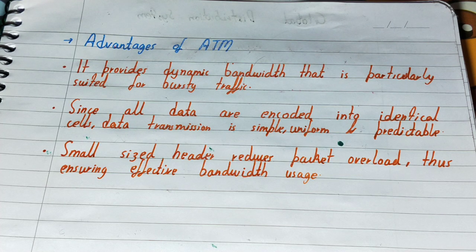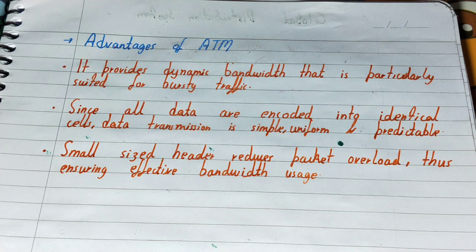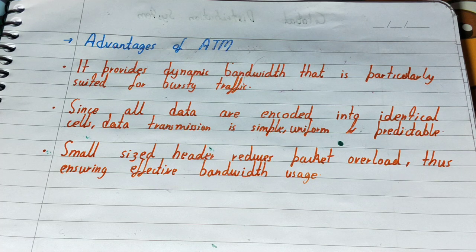The third advantage is that ATM's small-sized header reduces packet overhead, ensuring effective bandwidth use. Because the header size is small, the payload portion of each packet is used more effectively. If the header were large, it would waste space, since the header doesn't carry actual information — it only contains source, destination, and routing details. From the receiver's point of view, the header is essentially overhead, so keeping it small ensures the packet is used as efficiently as possible.